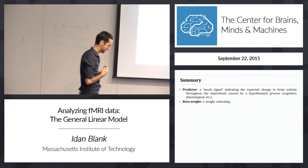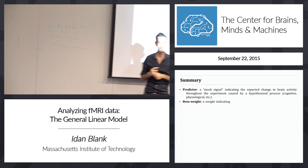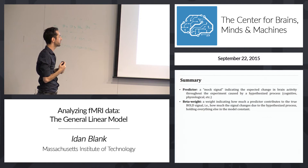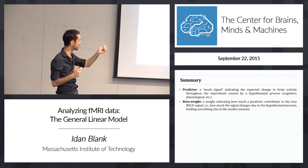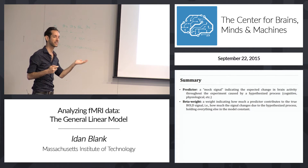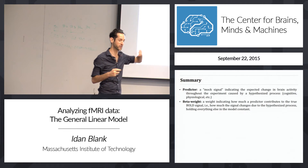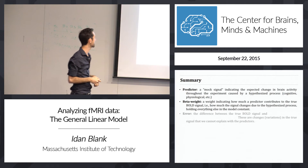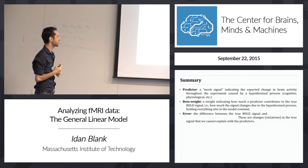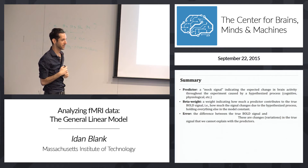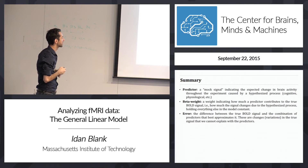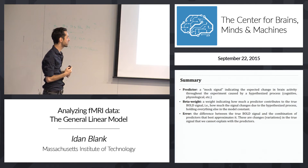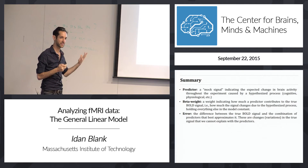A beta weight is a weight indicating how much a predictor contributes to the true BOLD signal, or how much the signal changes because of the hypothesized process. A beta for sentences tells you how much the signal increases from baseline when you read sentences, holding everything else constant. Error is the difference between the true BOLD signal and the combination of predictors that gives the best approximation — these are variations in the true signal that we cannot explain with the predictors: the unexplained variance.